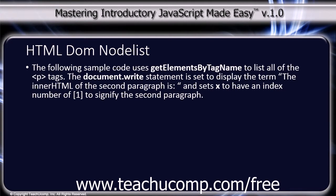The following sample code uses getElementsByTagName to list all of the paragraph tags. The document.write statement is set to display the innerHTML of the second paragraph, using an index number of 1 to signify the second paragraph.